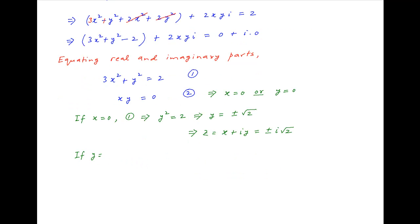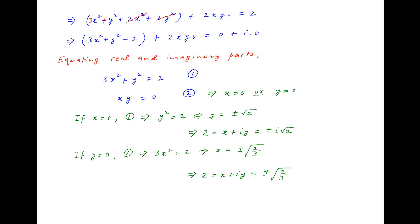In the second case, if y equals 0, then equation 1 implies that 3x squared equals 2, which gives x equals plus or minus the square root of 2 over 3. Therefore z equals plus or minus the square root of 2 over 3.